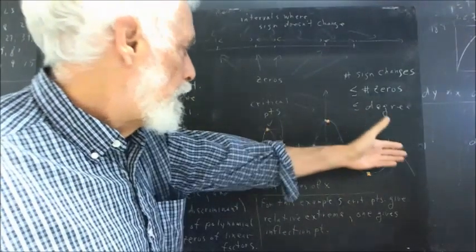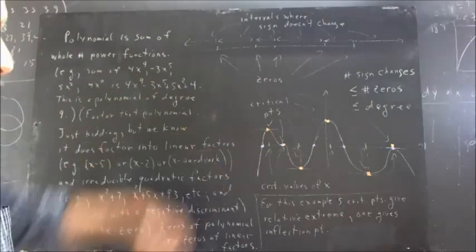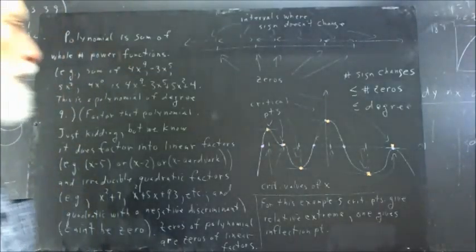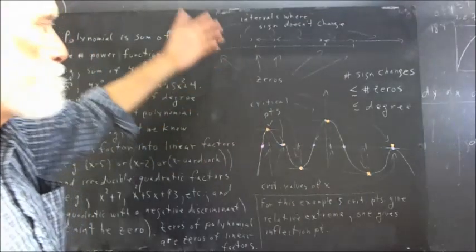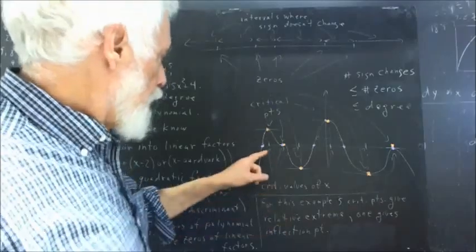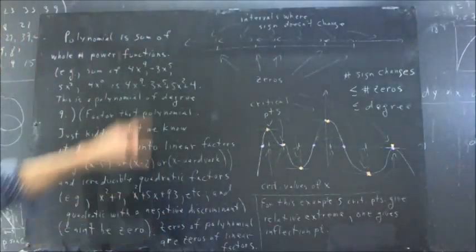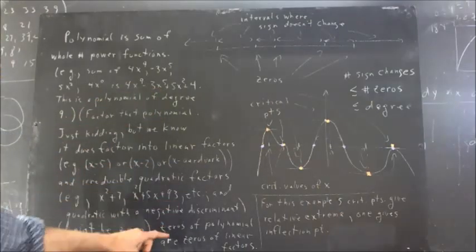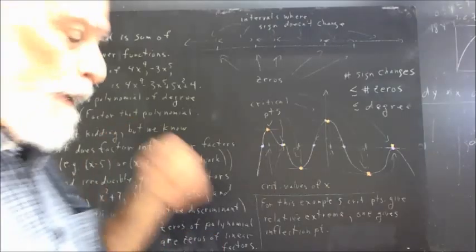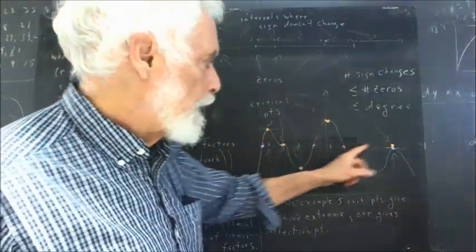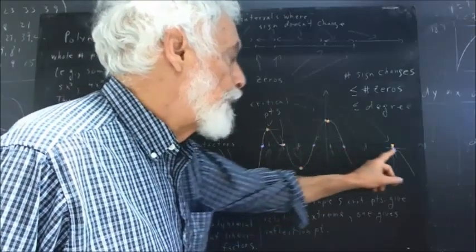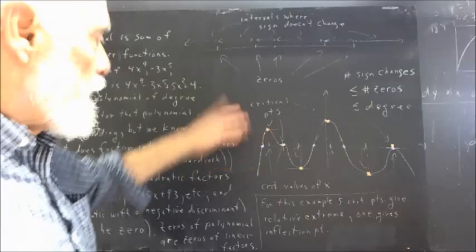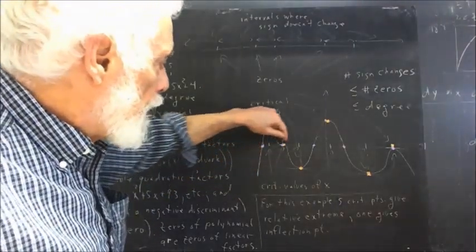The graph of a polynomial in general will have a shape very similar to something like this. For a general polynomial, we get zeros from the linear factors. If we factor the polynomial into linear factors and irreducible quadratic factors, then from the linear factors we can easily determine the zeros — the points at which the function takes the value zero. Those zeros are indicated by purple dots, and the graph can cross the x-axis only at those points.